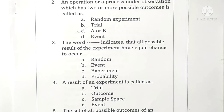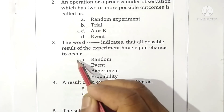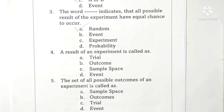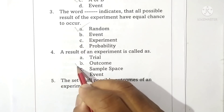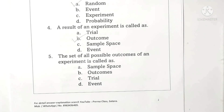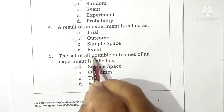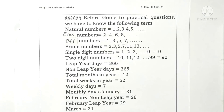Question 3: The word 'random' indicates that all possible results of the experiment have equal chance to occur. Option A is correct. Question 4: A result of an experiment is called an outcome. Option B is correct. Question 5: The set of all possible outcomes of an experiment is called a sample space. Option A is correct.